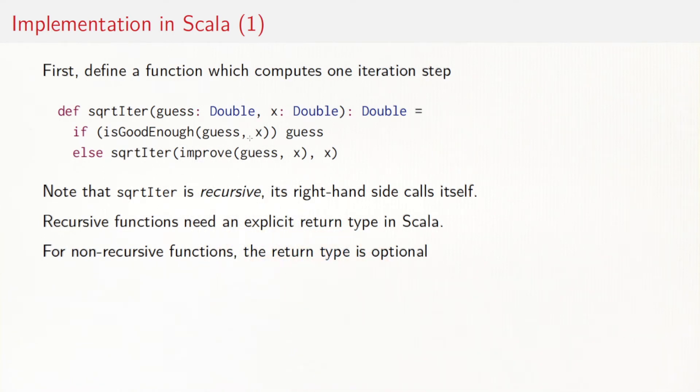The predicate that controls that, we give it a name. Let's call it is good enough. So if my guess is good enough, then I just can return the guess. If my guess is not yet good enough, then I have to improve my guess. Let's do that with another function improve and call square root iter again with the improved guess. Note that square root iter is recursive, so its right-hand side calls itself.